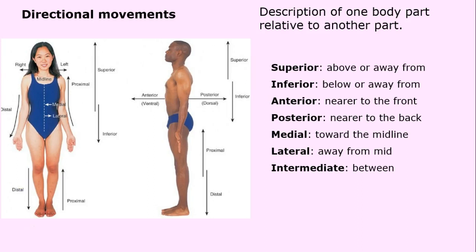All movements begin from the standard anatomical position. Superior doesn't mean it's better — it just means above or away from. Inferior doesn't mean it's bad — it's just below or away from. For example, the knee is superior to the foot, and the foot is inferior to the knee. Anterior means the front or nearer to the front; posterior means the back. Medial means toward the midline; lateral means away from the midline; and intermediate means in between.